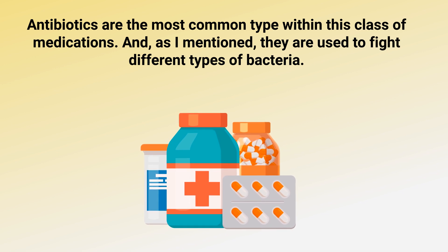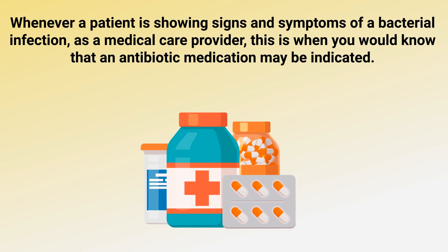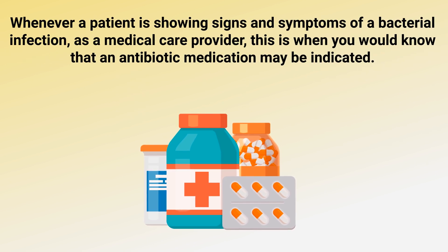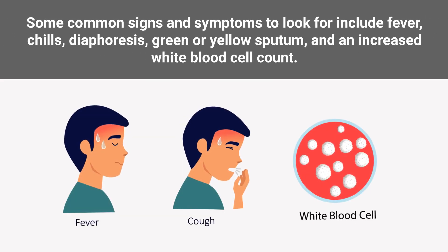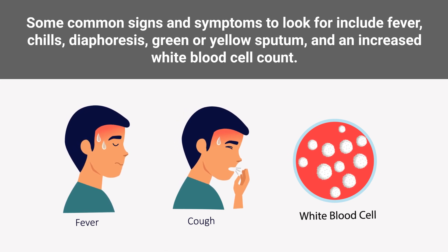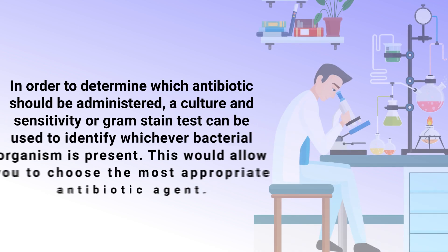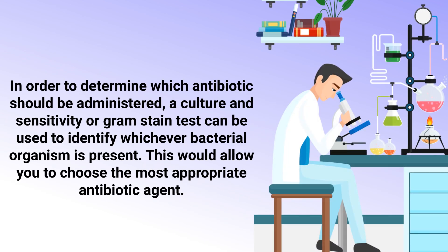Antibiotics are the most common type within this class of medication and are used to fight different types of bacteria. Whenever a patient is showing signs and symptoms of a bacterial infection, this is when an antibiotic medication may be indicated. Some common signs and symptoms to look for include fever, chills, diaphoresis, green or yellow sputum, and an increased white blood cell count.